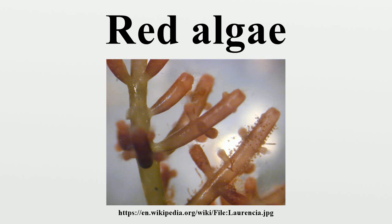Schmitzia hiscockiana; Chondrus crispus, Irish moss; Mastocarpus stellatus; Vanvorstia bennettiana, which became extinct in the early 20th century; Acrochaetium efflorescens; Audouinella, with freshwater as well as marine species.